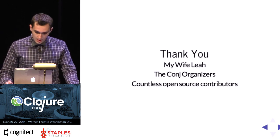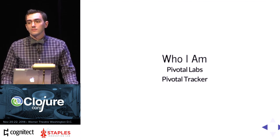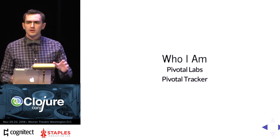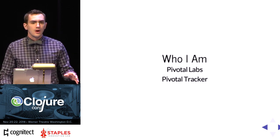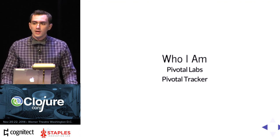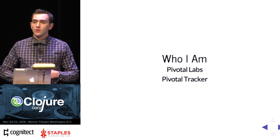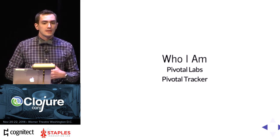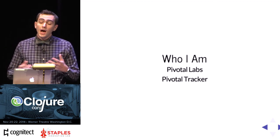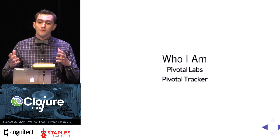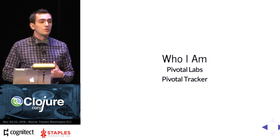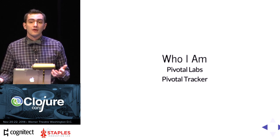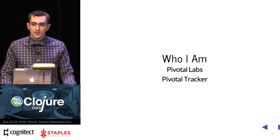So I work for Pivotal Tracker — I work at Pivotal Labs but I'm dedicated to the Pivotal Tracker team. Who here has used Pivotal Tracker? It's an agile product management tool. There are columns of stories that you can drag around and manipulate, and keep that in mind when we're discussing how we're doing tests, because that form really decides what kind of tests we can do and what kind of failures we have in a large JavaScript application.